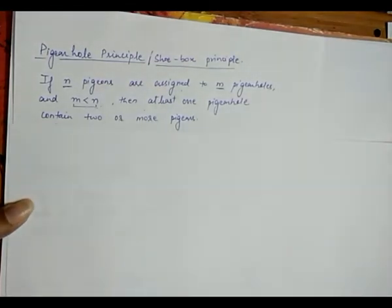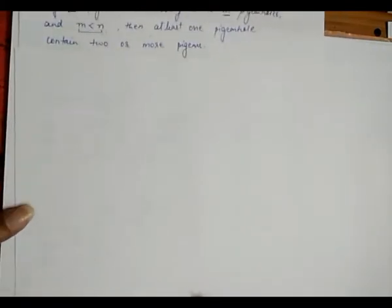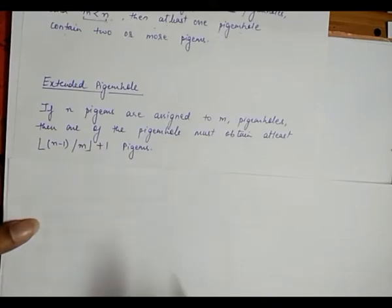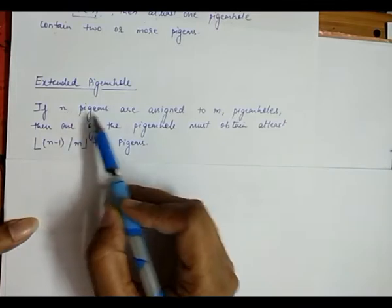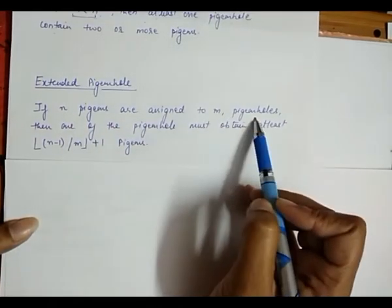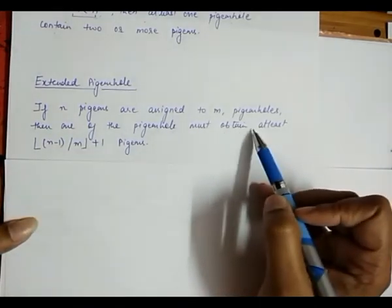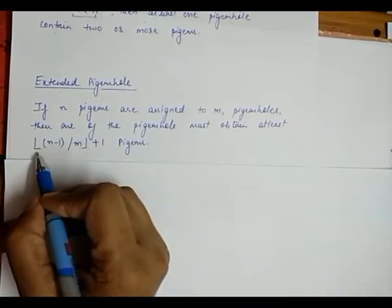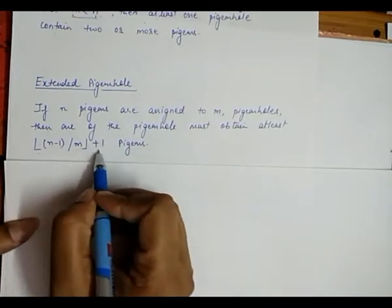This is known as the pigeonhole principle. Now, for solving problems using this principle, we extend it and call it the extended pigeonhole principle. This extended principle states that if n pigeons are assigned to m pigeonholes, then one of the pigeonholes must contain at least the floor value of (n minus 1) divided by m, plus 1 pigeons.